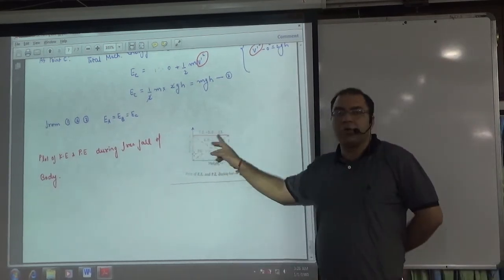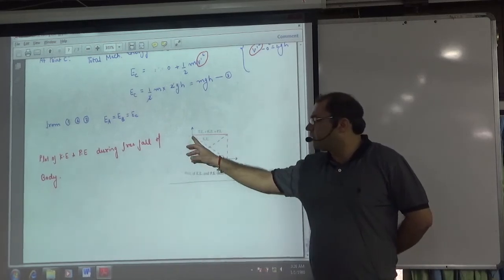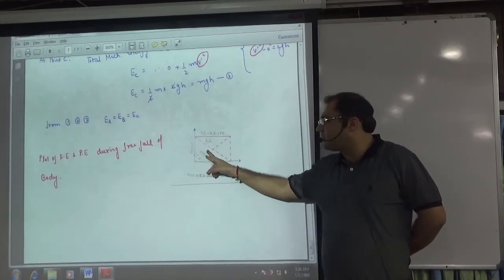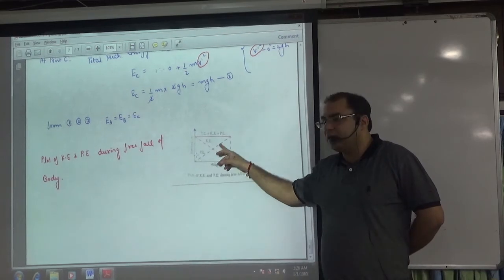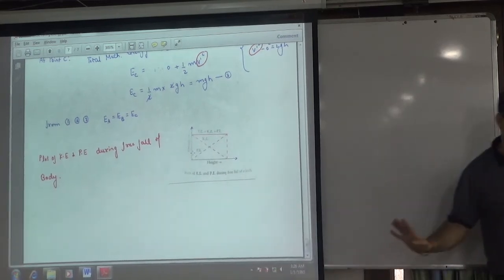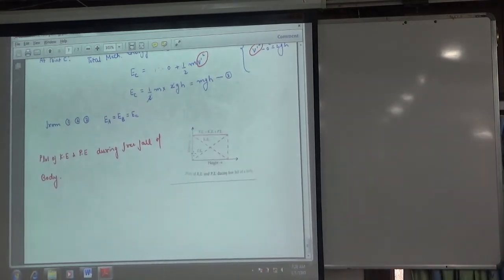You can see that total energy is constant. And here, kinetic energy - when the body is going up, the kinetic energy will decrease, potential energy will increase. So points are coming up here.